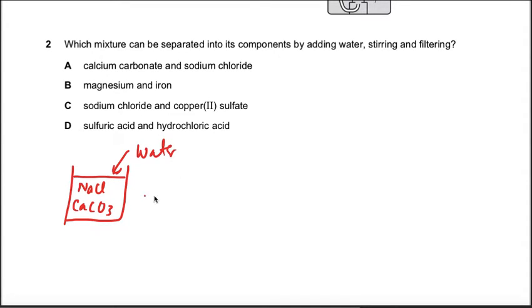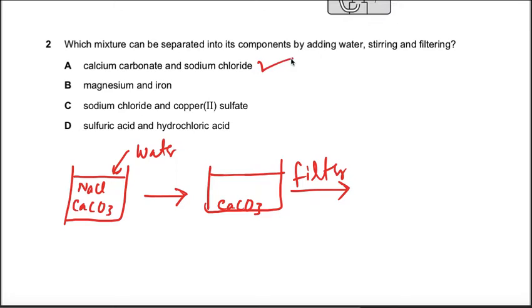So if you have NaCl and you have calcium carbonate in solid state and you add water, after adding the water sodium chloride will dissolve and calcium carbonate will remain insoluble at the bottom. So you will filter the solution, and after filtration you will get the calcium carbonate.